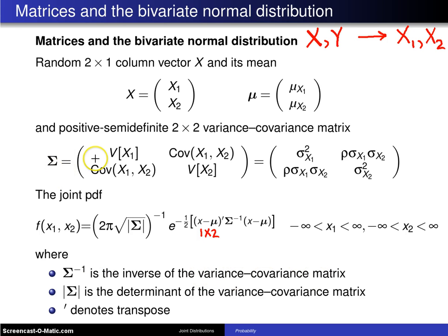Well, the variance covariance matrix is a 2 by 2 for the bivariate normal, so that will be a 2 by 2 matrix, and x minus mu will be a 2 by 1. So when you take a 1 by 2 times a 2 by 2 times a 2 by 1, you wind up with a 1 by 1.